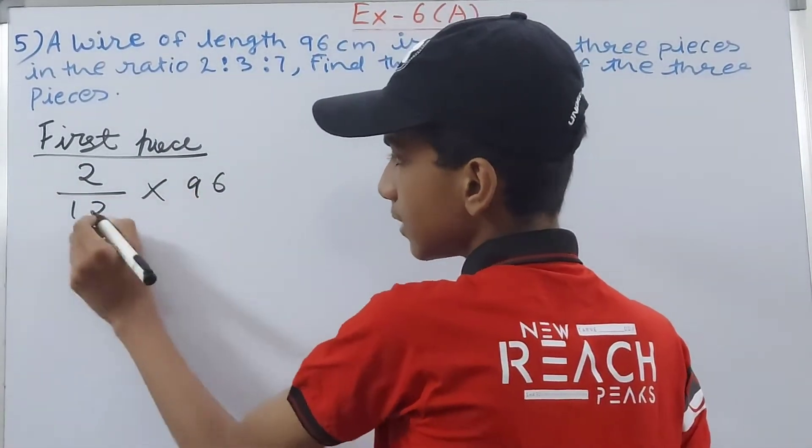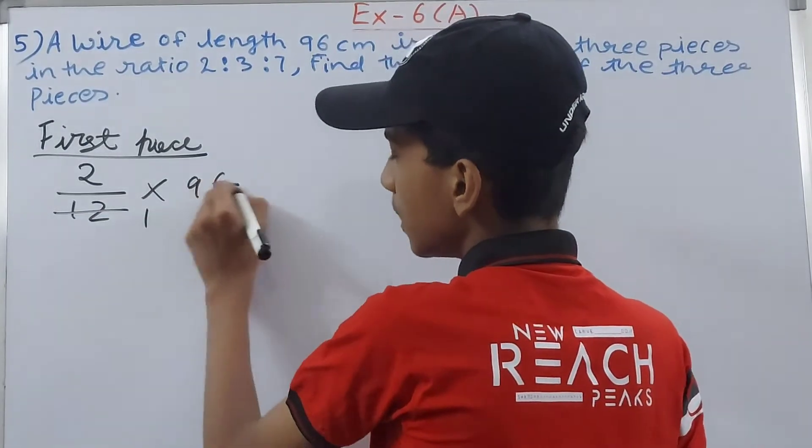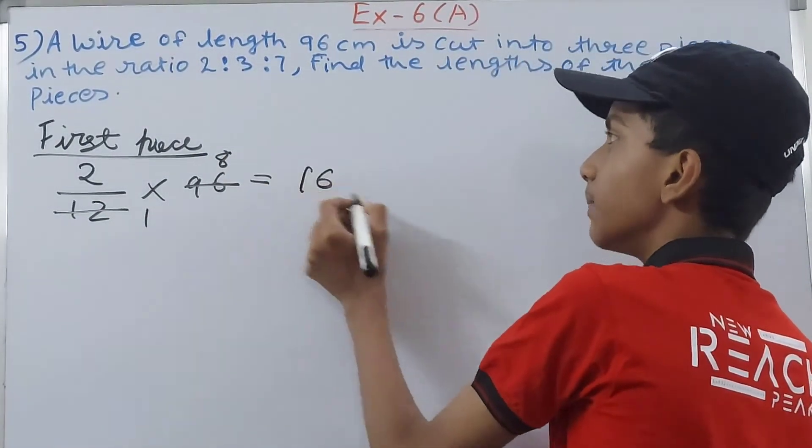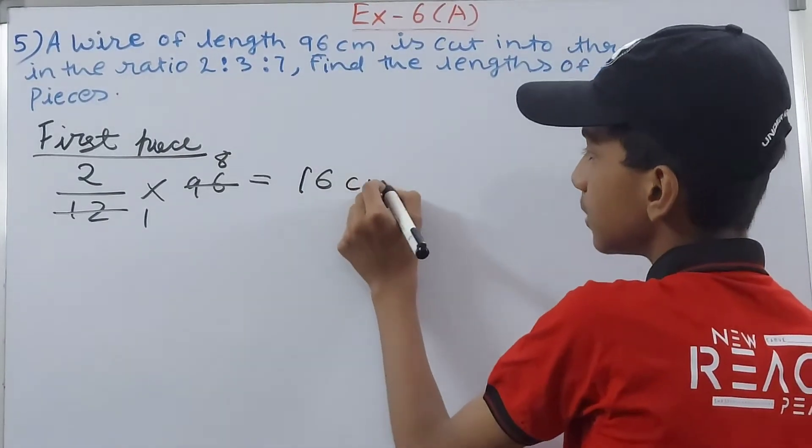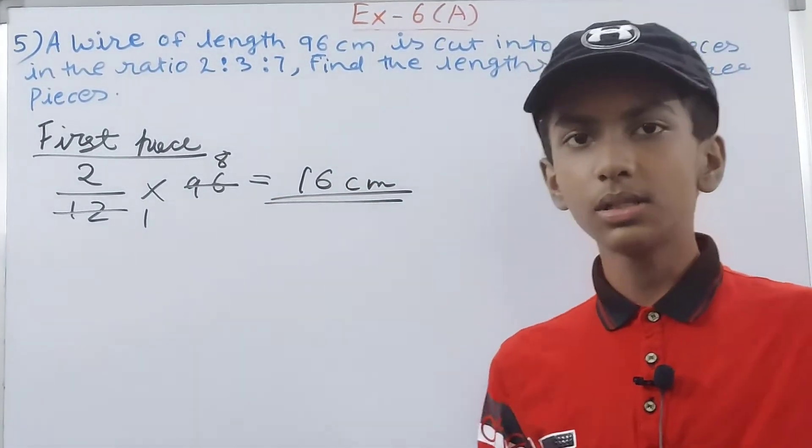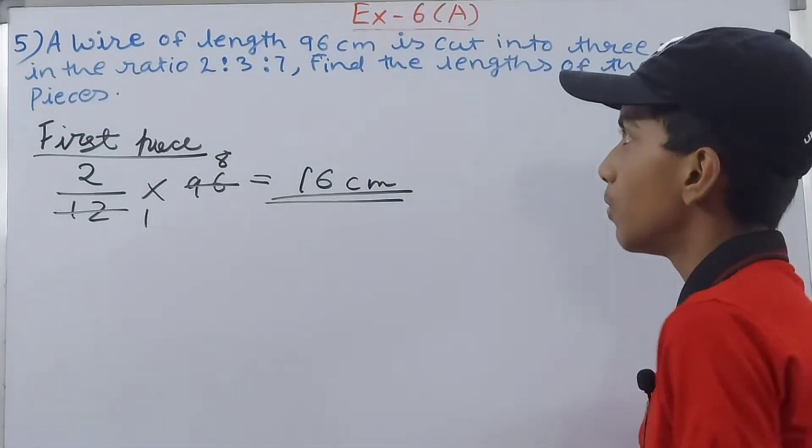This becomes 1 upon 12, 8 is 96. So 8 times 2 is 16. And what? Centimeters. Centimeters is also very important. So 16 centimeters is the length of the first piece of our ribbon or whatever.